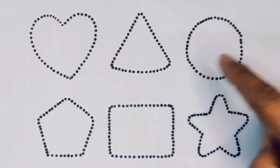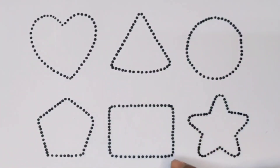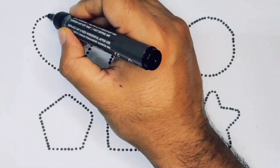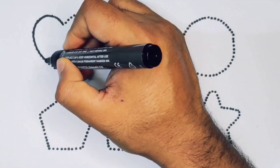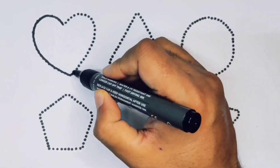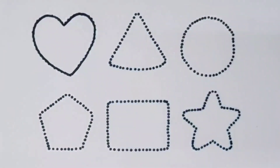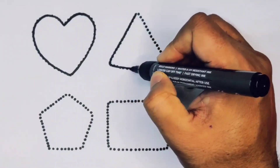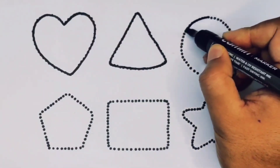Now let's learn the 2D shapes: heart, triangle, circle, pentagon, rectangle, and star. First we're going to draw the shapes: heart, triangle, circle.